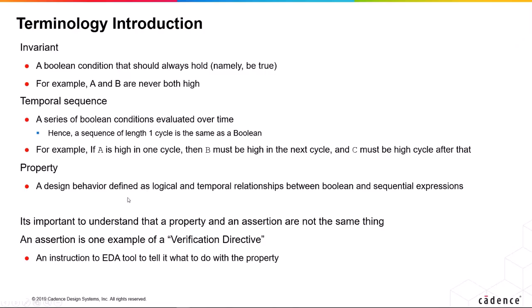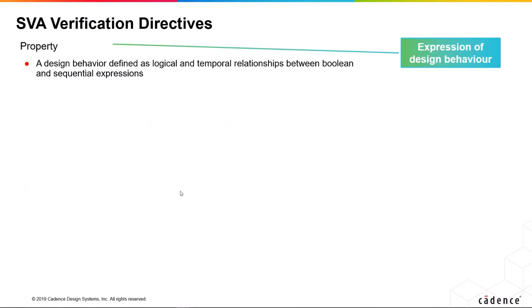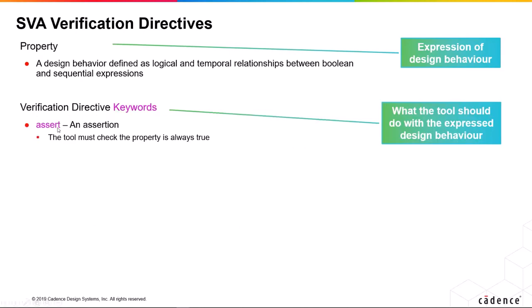An important distinction: a property and an assertion are not the same thing. People often think they are, but they're not. An assertion is just one example out of four of a verification directive. A verification directive is an instruction to the EDA tool telling it what it should do with the property you've given it. The property is the definition of design behavior. An assertion means the tool should check that property is always true.